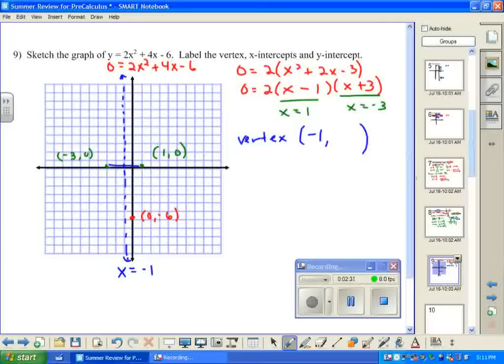If I substitute that value in place of x in our original equation, I can identify that the y-coordinate of the vertex is negative 8. Substituting negative 1 for x and doing some calculations, I'll end up with the vertex at (-1, -8). So the vertex would be here.